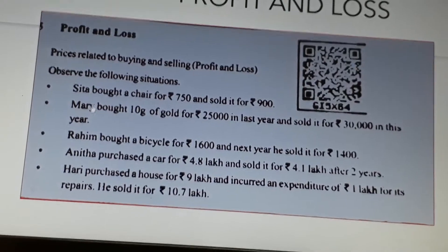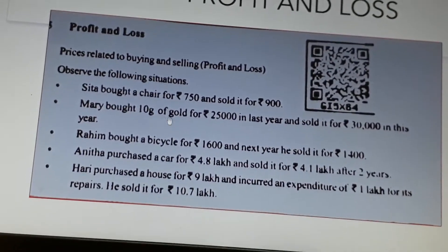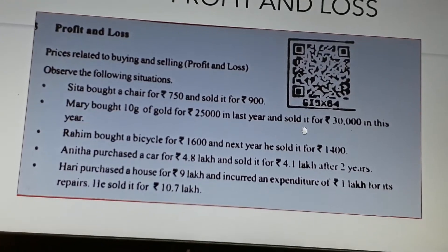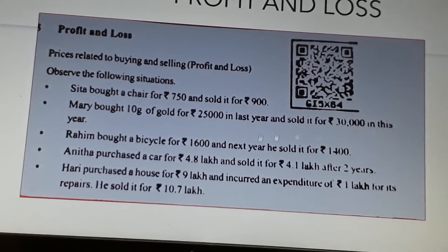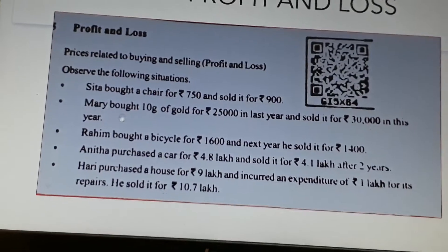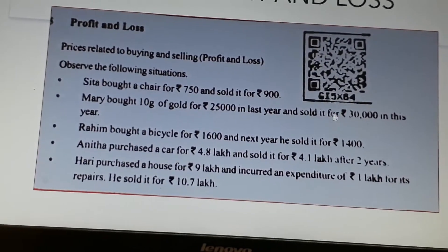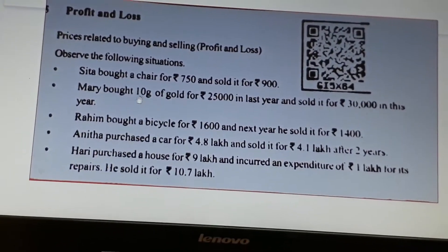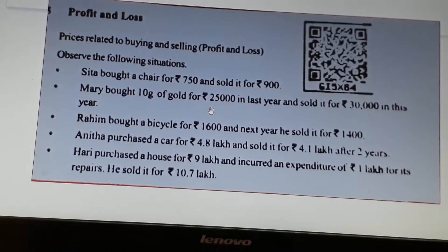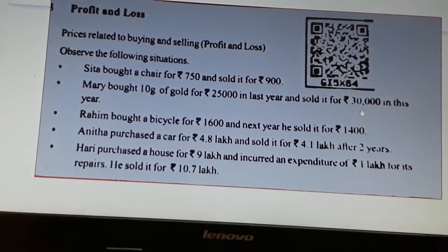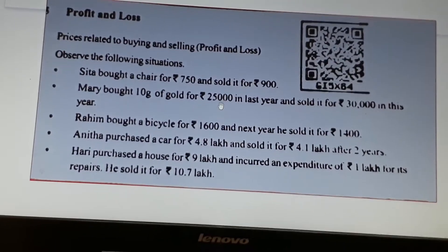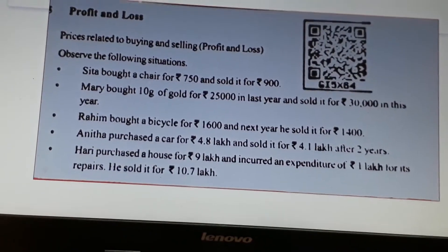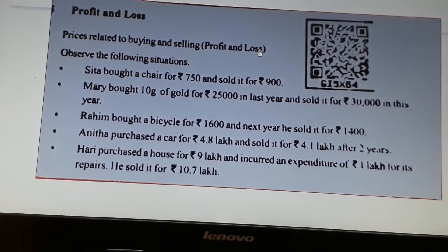Let's take another example. Mary bought 10 grams of gold for 25,000 rupees last year and sold it for 30,000 rupees this year. 30,000 rupees is the selling price and 25,000 rupees is the cost price — bought means cost price. The difference is 30,000 minus 25,000, which equals 5,000 rupees. Is 5,000 rupees a profit or a loss? Profit.